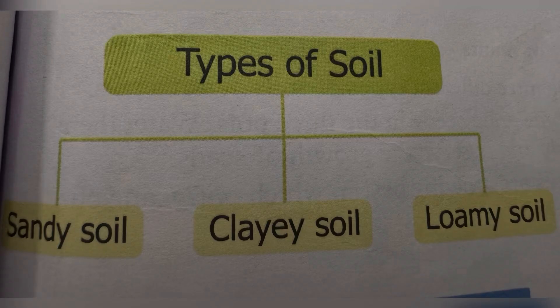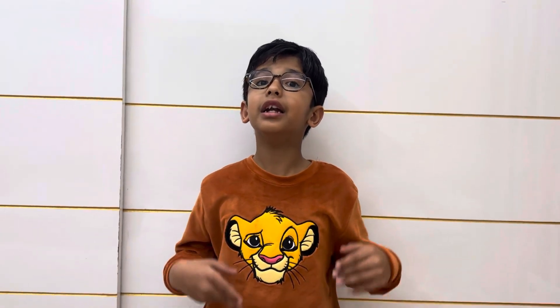Hello guys, you are watching Glass Matrix. Our topic is types of soil. Soil found in different places can be of different colors like red, black, and brown. There are three types of soil. Let's start with sandy soil.